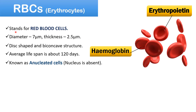RBC stands for red blood cell. These cells are also known as erythrocytes. The diameter of an RBC is about 7 micrometers and its thickness is about 2.5 micrometers. RBCs have a disc-shaped biconcave structure. The average lifespan of an RBC is about 120 days, after which they are removed from the circulatory system by special cells known as macrophages in the spleen. RBCs are also known as anucleated cells because they don't contain any nucleus. The production of RBCs is regulated by erythropoietin hormone released by the kidney.